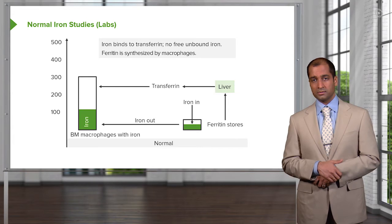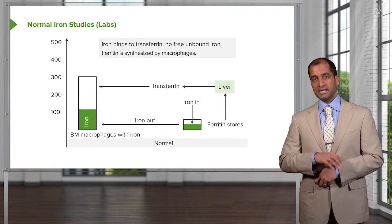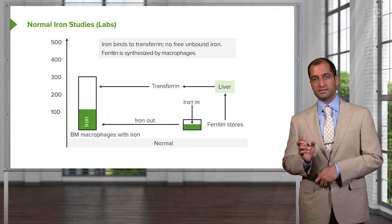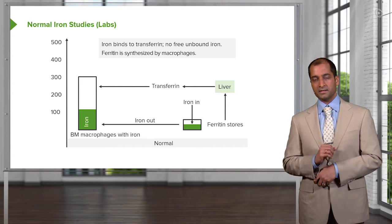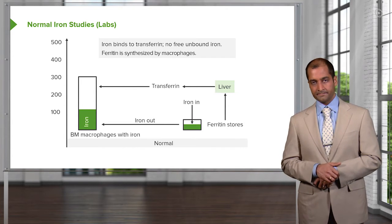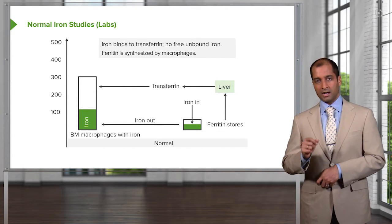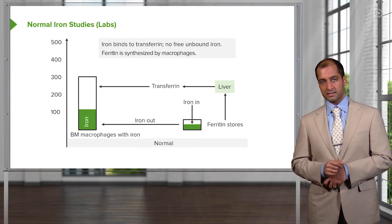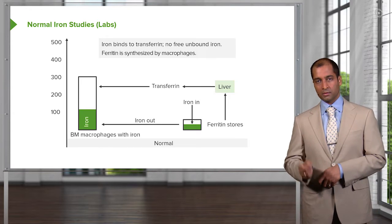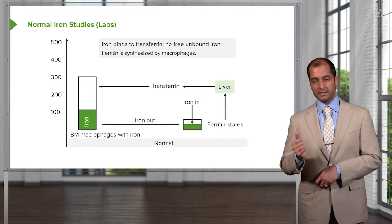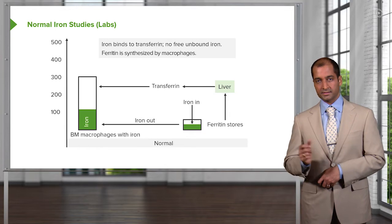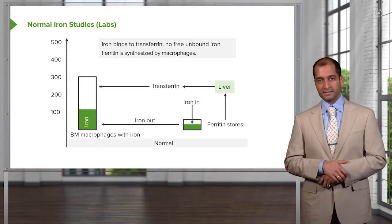With normocytic, you want to do iron studies? Correct. And even if you did, with microcytic and then normocytic, the iron studies would come back to be normal. So under microcytic, obviously we're going to work through iron quite a bit: iron deficiency anemia, anemia of chronic disease, and sideroblastic anemia.